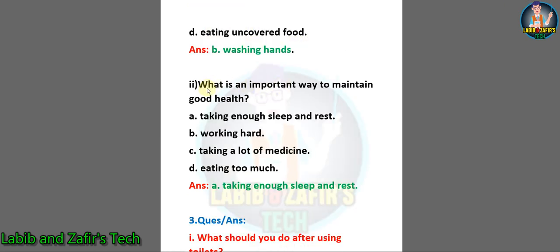Number two: what is an important way to maintain good health? A. Taking enough sleep and rest. B. Working hard. C. Taking a lot of medicine. D. Eating too much. So the answer will be A. Taking enough sleep and rest. Now let's go to the question answers.